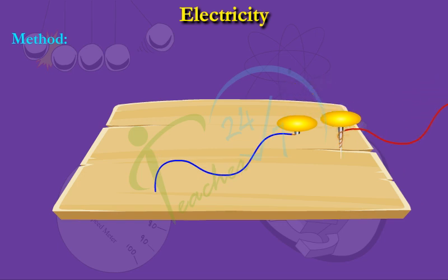Push the second board pin at the end loop of the paper clip and enter the board at a distance of one centimeter away from the first drawing pin. Now your switch is ready.